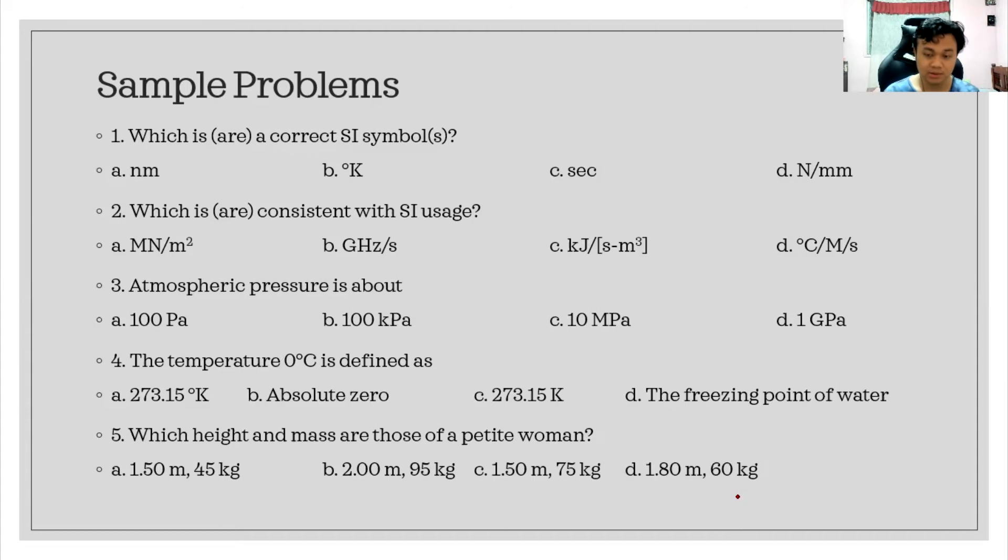Let's see the answers. For number one, it is letter D. And for number two, we have letter D also. For number three, actually 100 Pascal is way up in the atmosphere. And then for letter C, it's way down below the sea level. Because as the depth increases, the pressure also increases. And absolutely, most definitely, one gigapascal is, you're crashed already. So the correct answer is 100 kilopascal. Because for a person in sea level, you have one atm, which is roughly equal to 100 kilopascal.